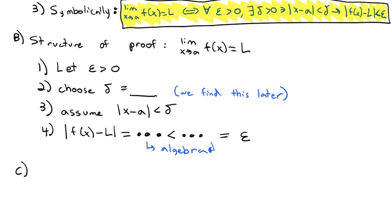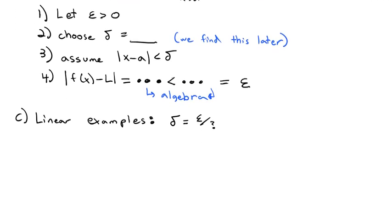Let's do a couple of examples — four proofs in total, then you can practice on your own. First, let's do some linear examples. As a tip: if we're dealing with a linear equation like y equals mx plus b, the delta is generally equal to epsilon divided by something, and you have to figure out what that something is. Following that same structure, first we're going to prove that the limit as x approaches 3 of 4x minus 7 equals 5. Notice that 3 is the a, what x is approaching; 5 is the limit L; and 4x minus 7 is the function.